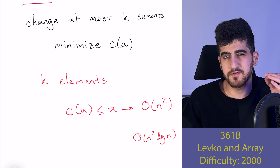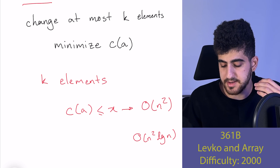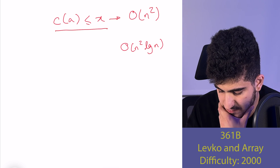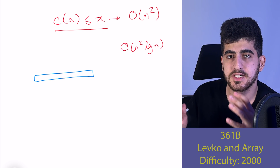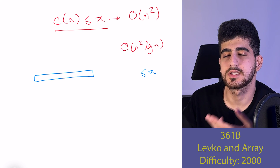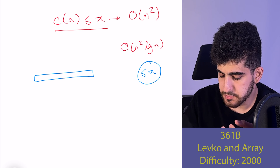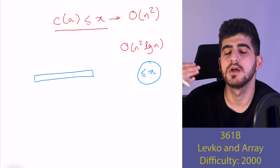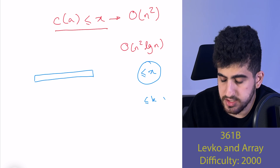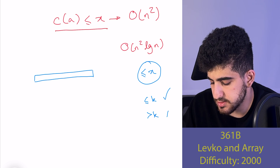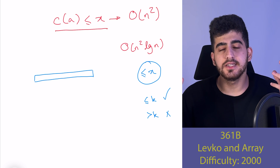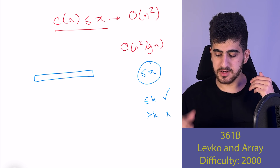If we do a binary search, we want to find out: can we make C(a) ≤ some fixed value X? With X fixed, we want to find the minimum number of operations required to make C(a) ≤ X. If that value is ≤ k, it's possible to reach X; if it's more than k, it is not possible. So we've changed the problem: initially K was fixed and X was not, now we fix X and find the minimum K required.